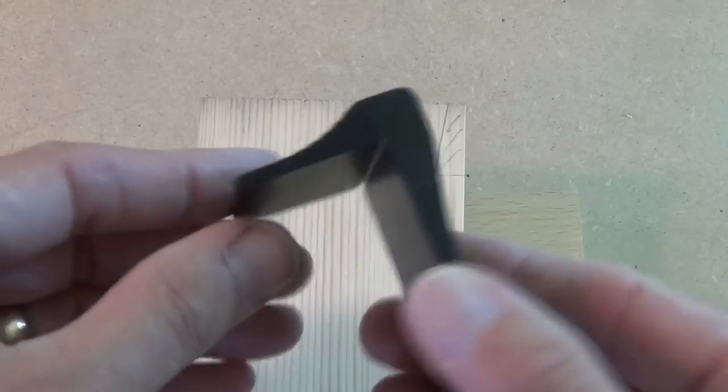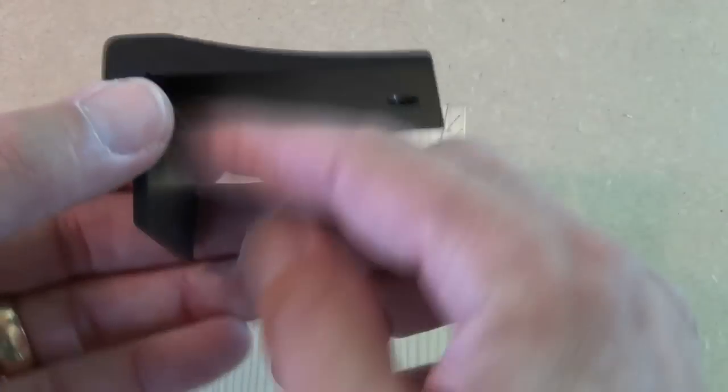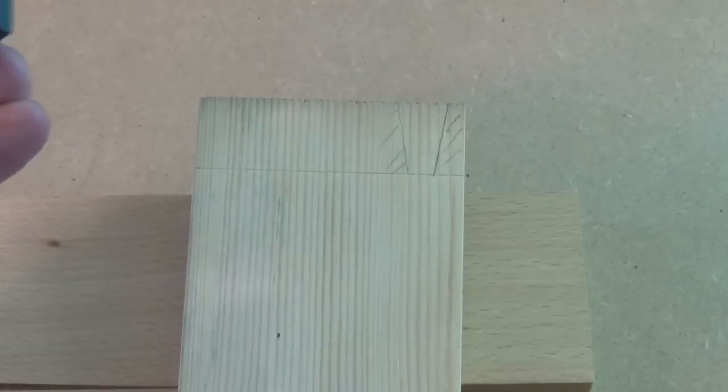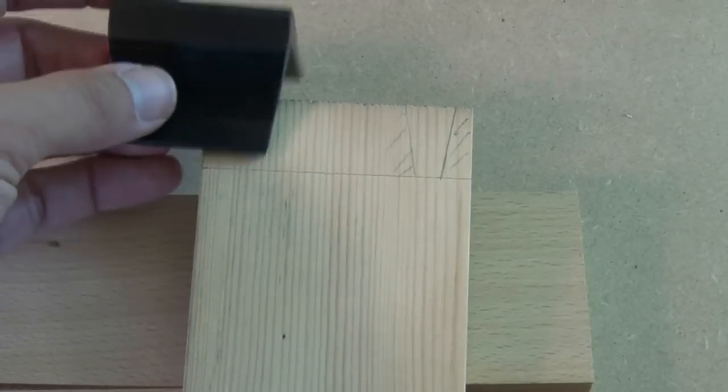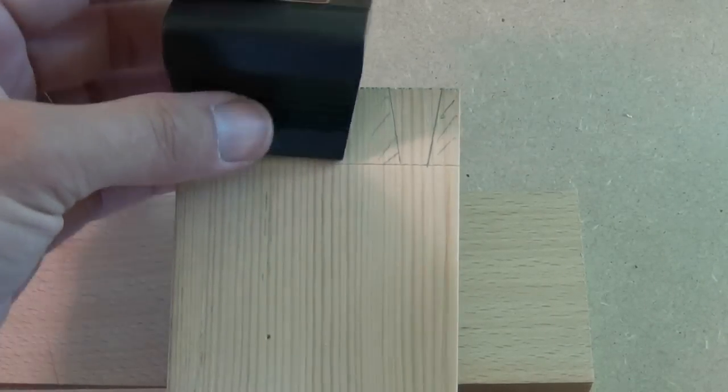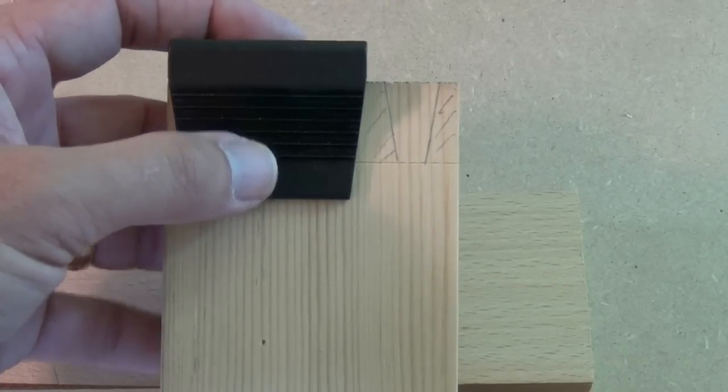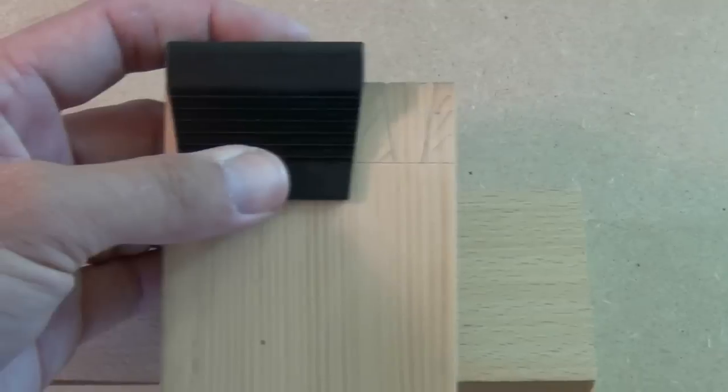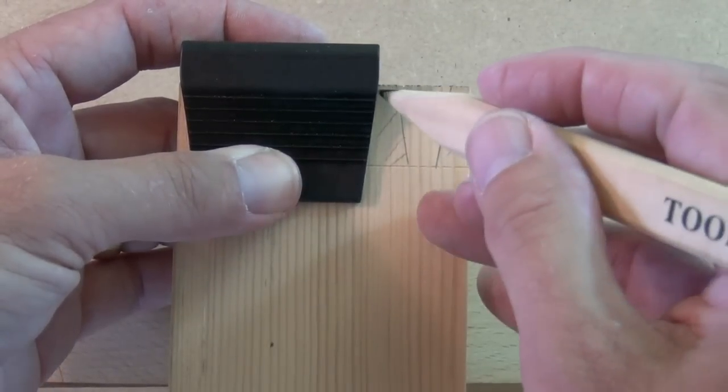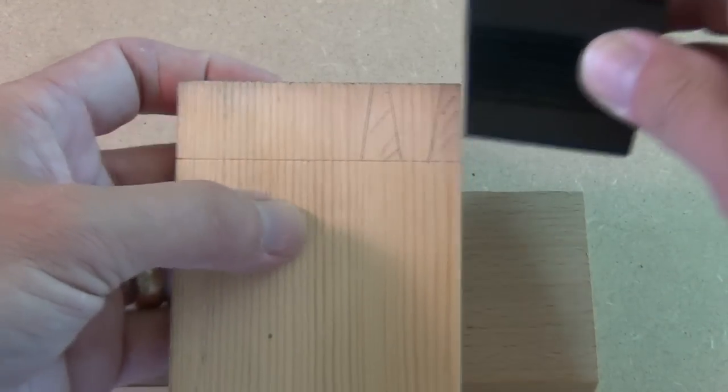The Veritas saddle marker—the longer length goes on the end of your stock. And this one here is a one in eight marker, so this would be more appropriate for hardwood. Again, sharp pencil. You can use a marker pen if you like.